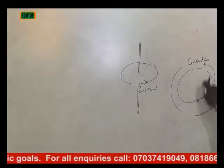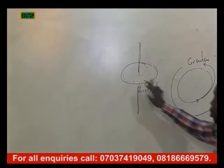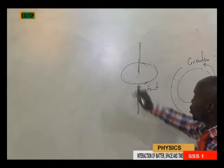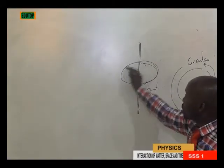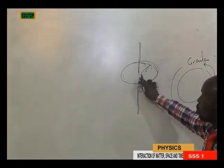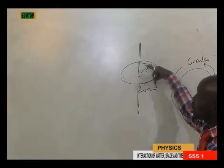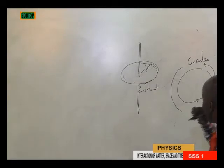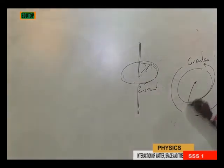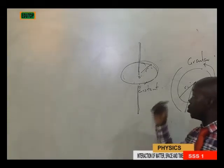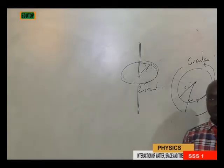A body can move in a circular direction or a rotational direction. If you move in a rotational direction, it means there is a constant radius between the center point and the circumference at which the object is moving. But if it's circular, there is an increment in radius — radius 1 and radius 2. So for circular, there is no constant radius, whereas for rotational, there is a constant radius.